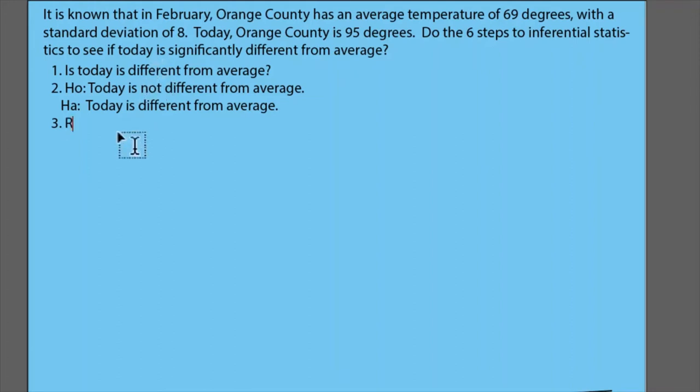So I'm going to maybe write it up in words here. So the rejection region is scores above 1.96 or below negative 1.96.